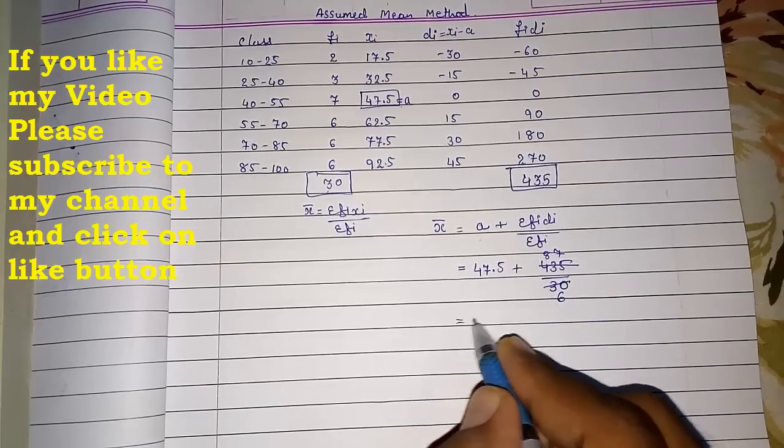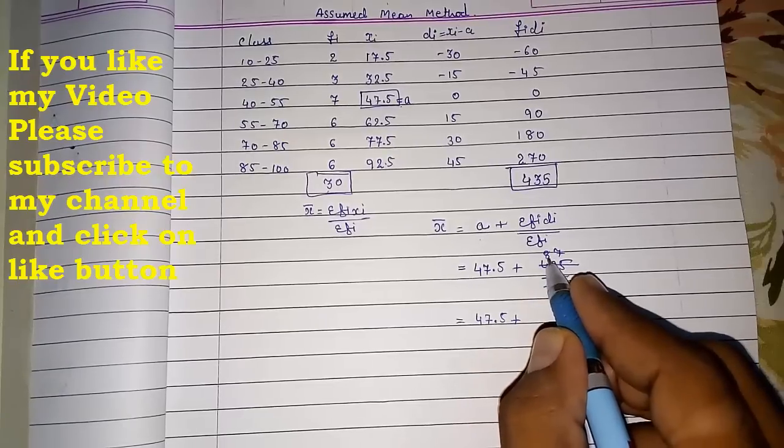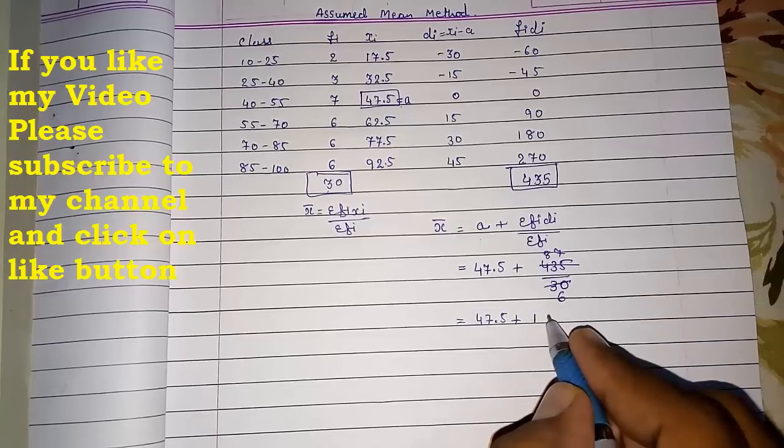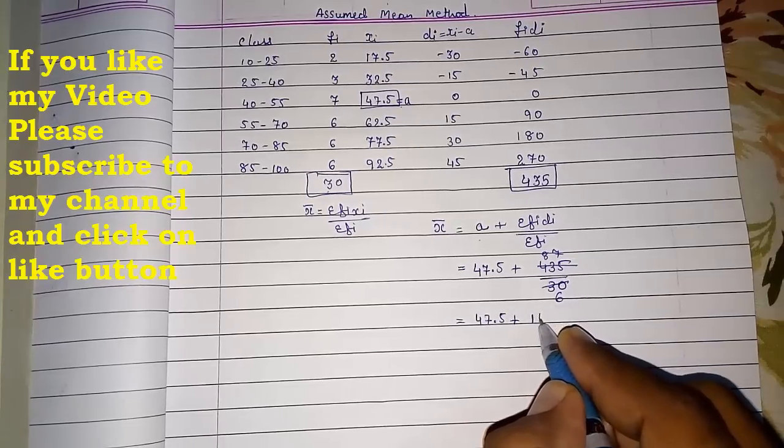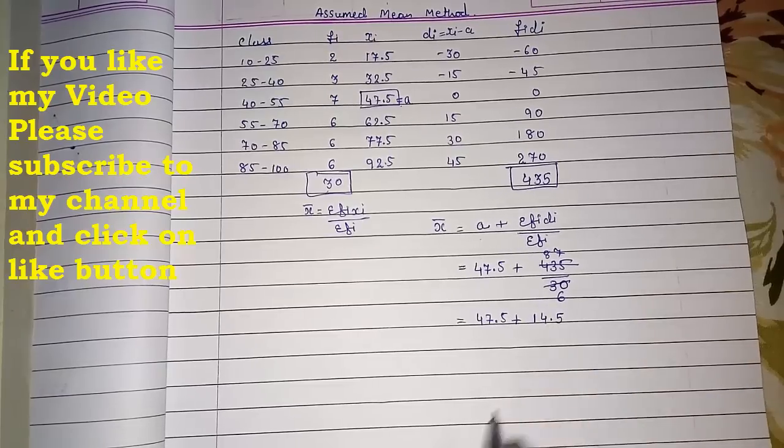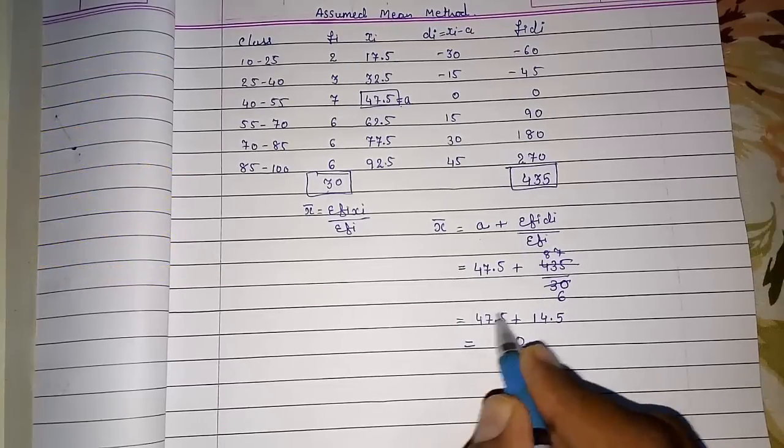So it's 47.5 plus, now 68, so 6 ones are 6, it's 27, so 6 fours are 24, 30. So I think it is 14.5. Now we have to add that: 50.5, carry 1, 8, 12, carry 1, 5, and 6. It's 62.